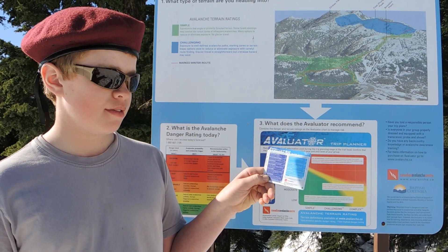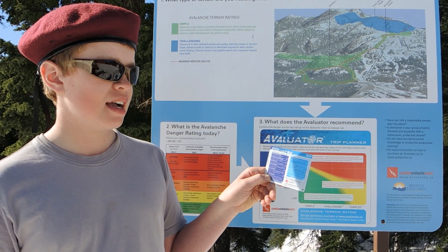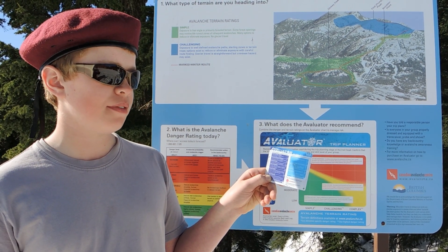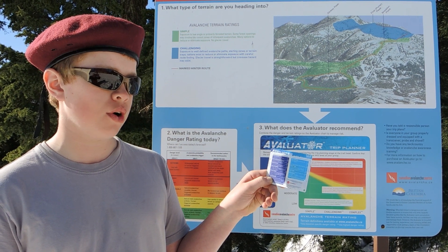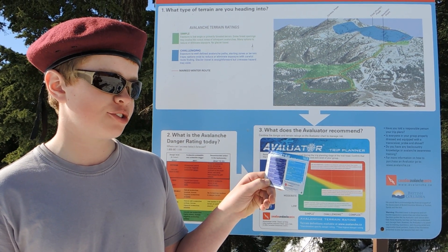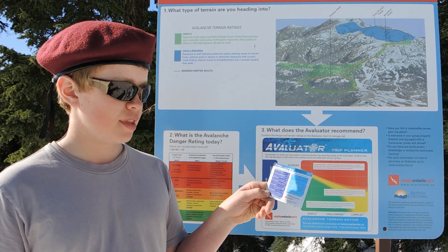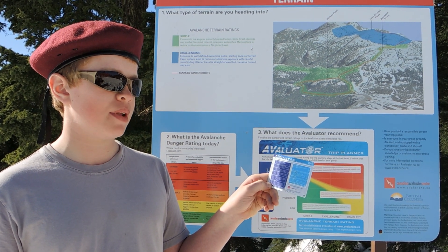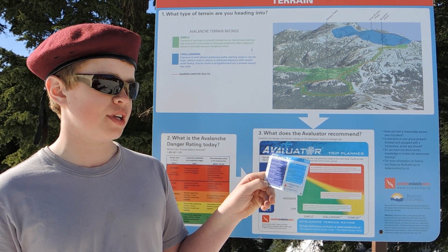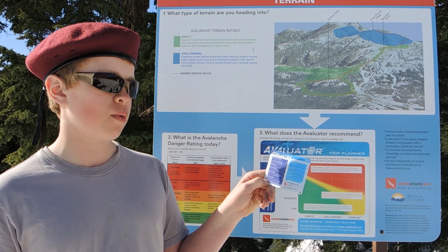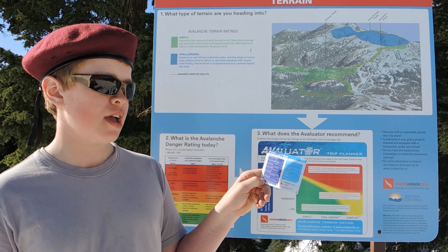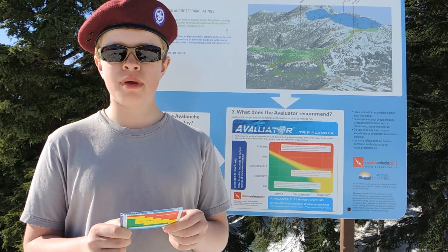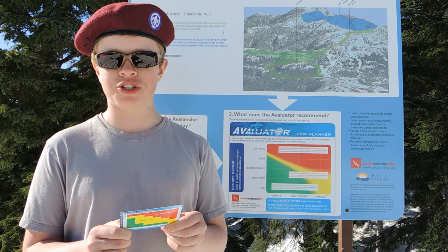Question number five: recent loading — has there been loading within the past 48 hours, including roughly 30 centimeters of new snow or more, significant wind transport, or rain? Question number six: critical warming — has there been a recent rapid rise in temperature to near zero degrees, or is the upper snowpack wet due to strong sun, above-freezing air temperatures, or rain?